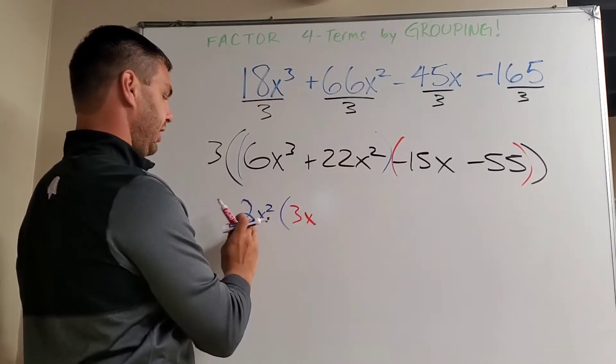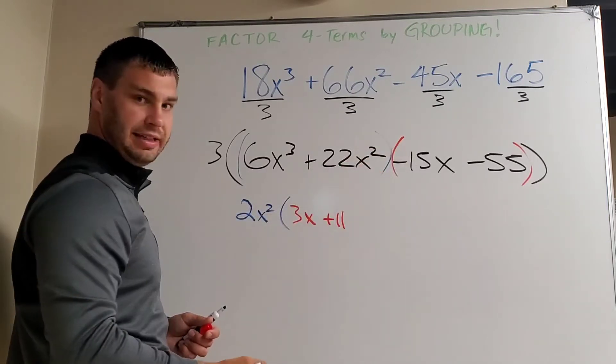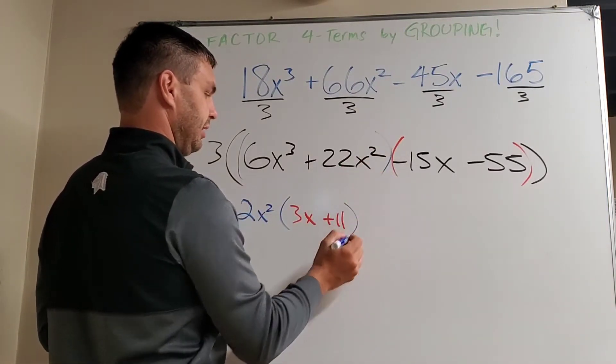And then same thing over here, 22 divided by 2 is 11, positive 11. x squared divided by x squared cancels. So we just end up with 3x plus 11.